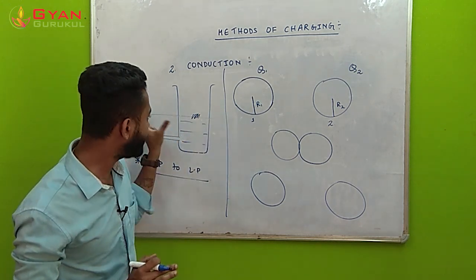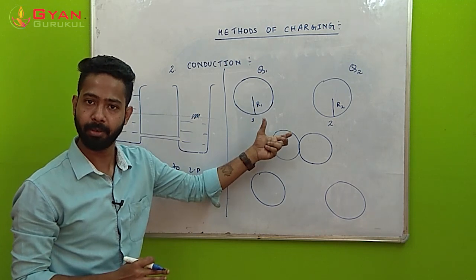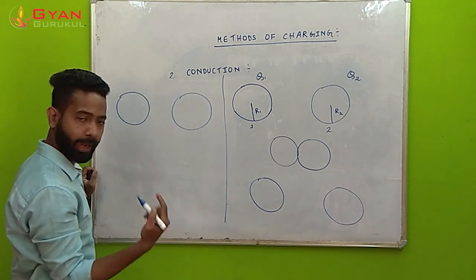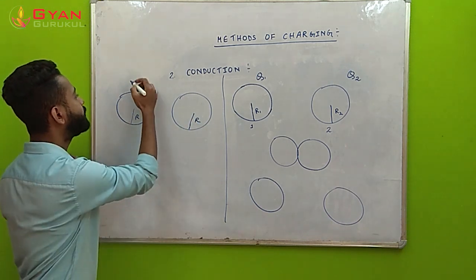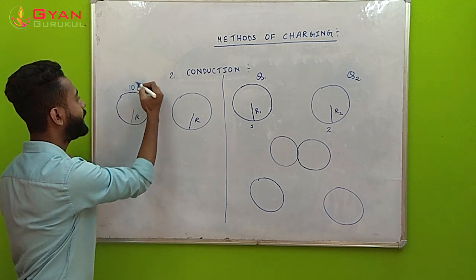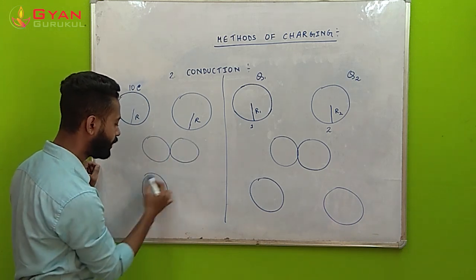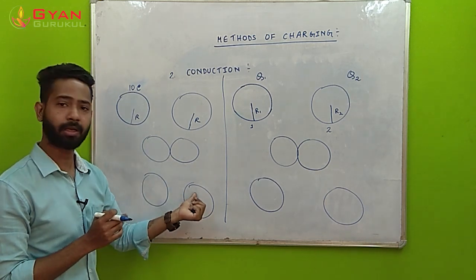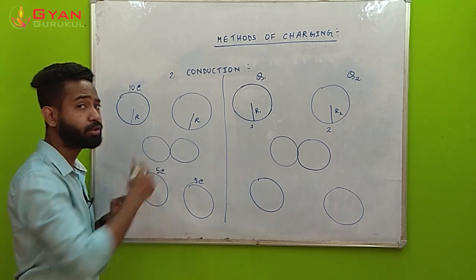Now let us relate this example to the sphere experiment. Let me take two identical spheres — identical means they have the same radius. If this particular sphere has 10 coulombs of charge and the other has none, what happens when I let them touch momentarily and then remove them? We can already guess: how much charge would each conductor have? They would have 5 coulombs and 5 coulombs — exactly half and half, just like we saw in the water example.